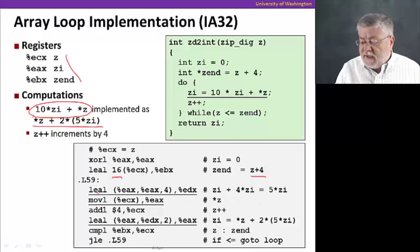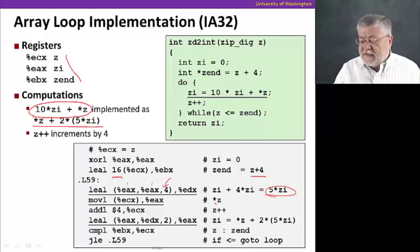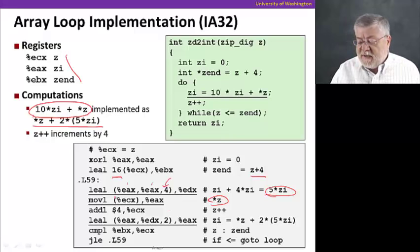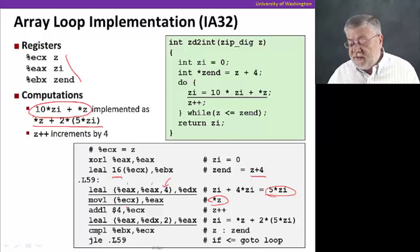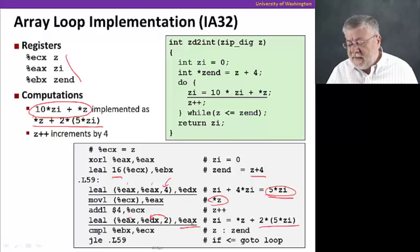You'll notice here that first we use an effective address instruction to compute five times zi. That's convenient to do because we can do a power of two times the value plus the value again, which gives us five times the original value. Then we get the value of the next digit by dereferencing the address z. Remember that star z is represented by those parentheses around the value in the register ecx. It says to dereference that as an address. Then we add those together but further multiplying that five times zi by another two. The way we do that is two times that value plus the star z and take that result and put it into eax. We're ready for the next time around the loop.